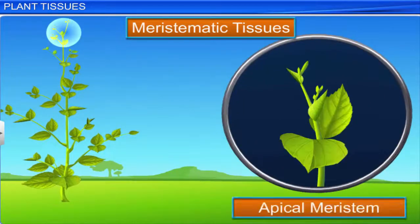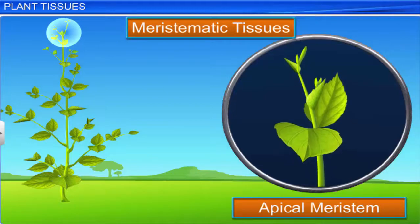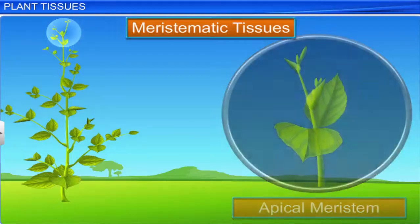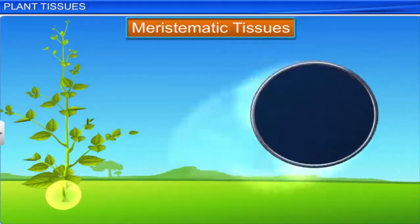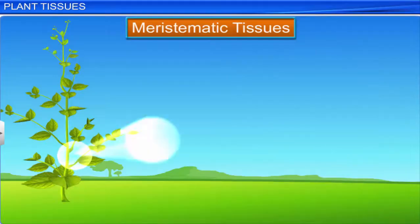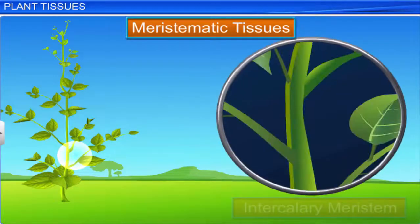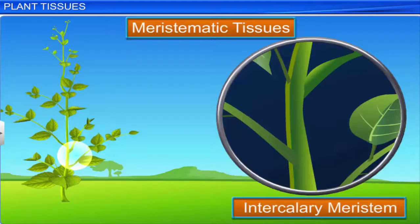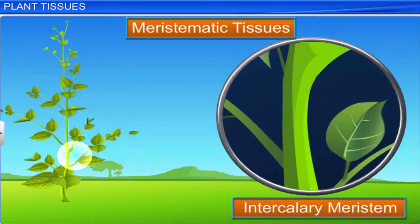Apical meristem is present at the apical or growing tips of stems and roots. It increases the length of the plant. Lateral meristem or cambium is present in the radial portion of the stem or root; it increases the girth of the plant. Intercalary meristem occurs at the base of the leaves or at the internodes, and it helps to increase the length of the internode.